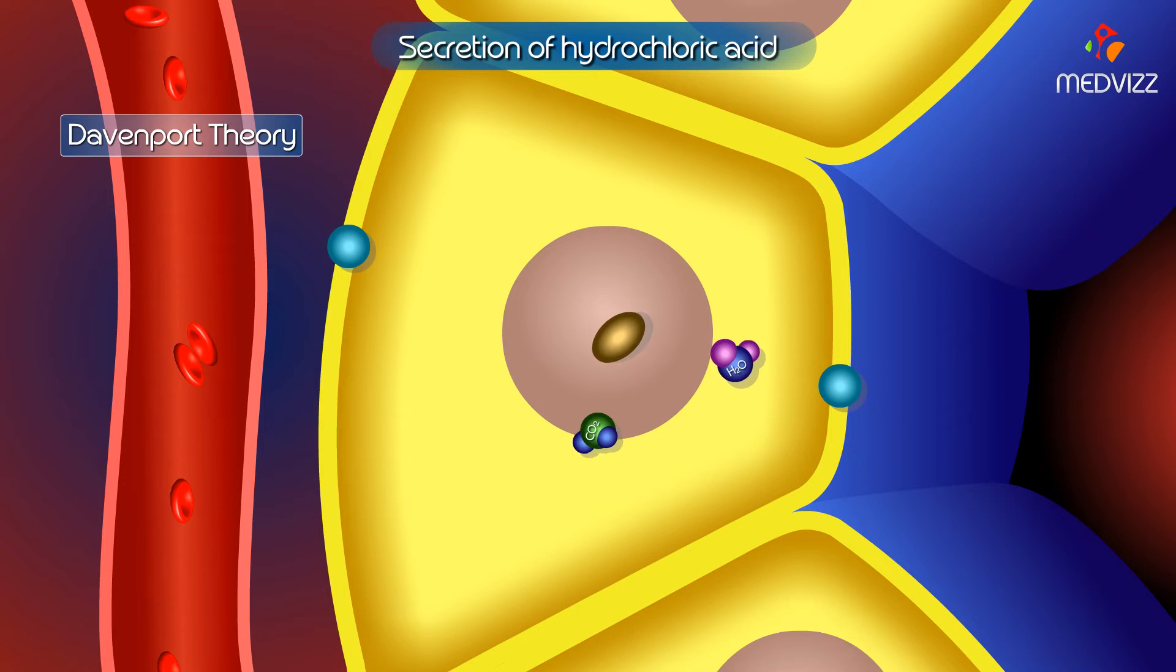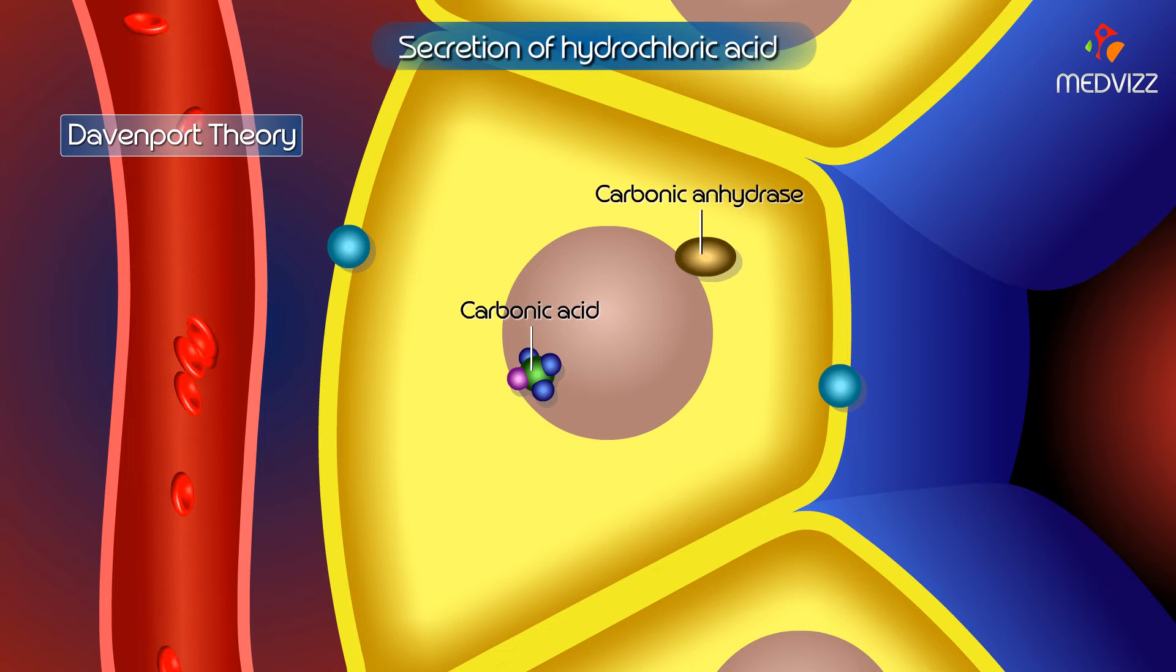Carbon dioxide combines with water to form carbonic acid in the presence of carbonic anhydrase. Carbonic acid is a very unstable compound and splits into hydrogen ion and bicarbonate ion.